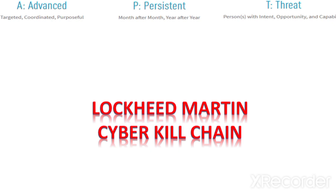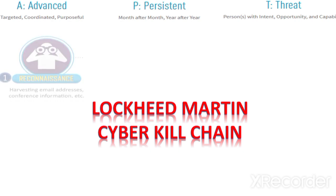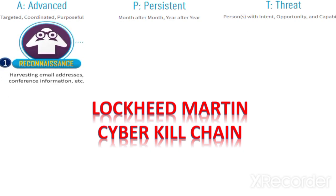The first step in the cyber kill chain is reconnaissance, where the hacker harvests information related to an organization — for example, email addresses, URLs, or any events and activities going on within the organization.